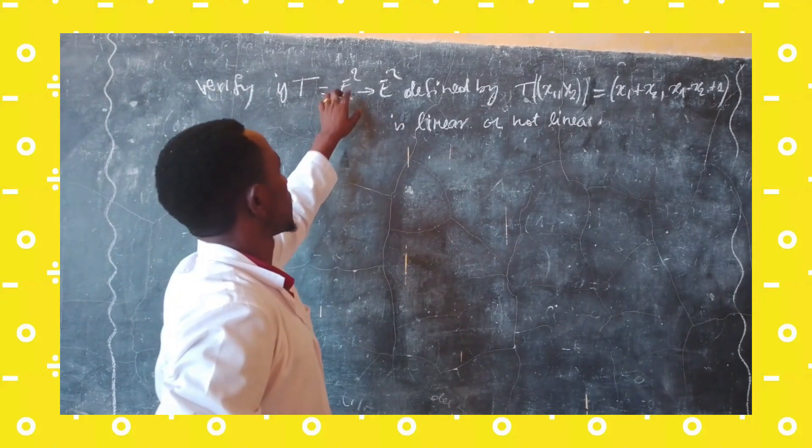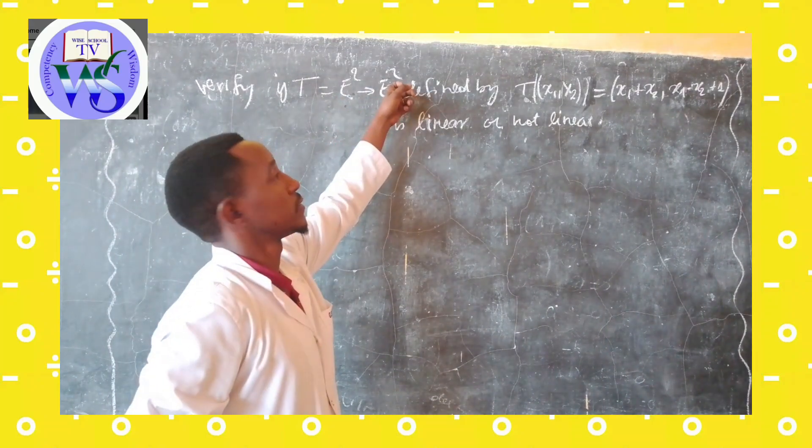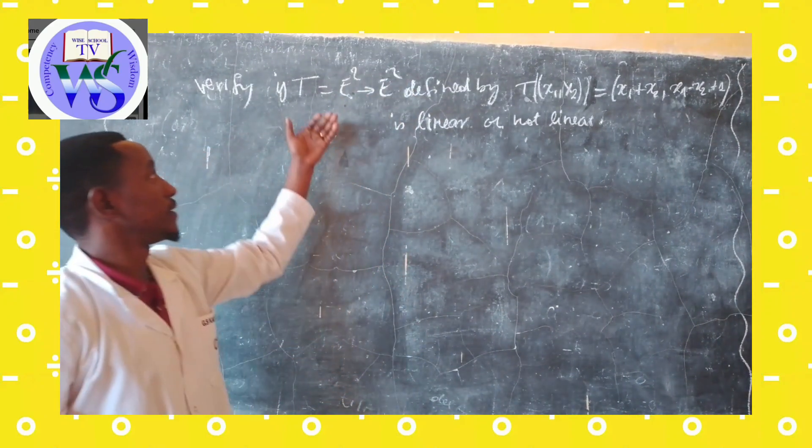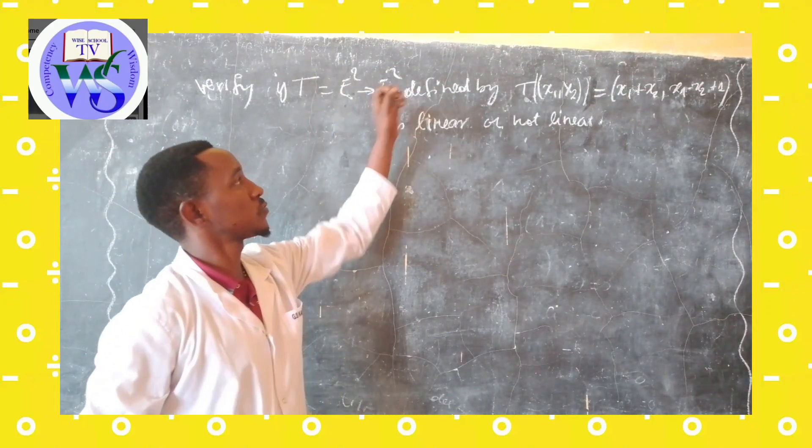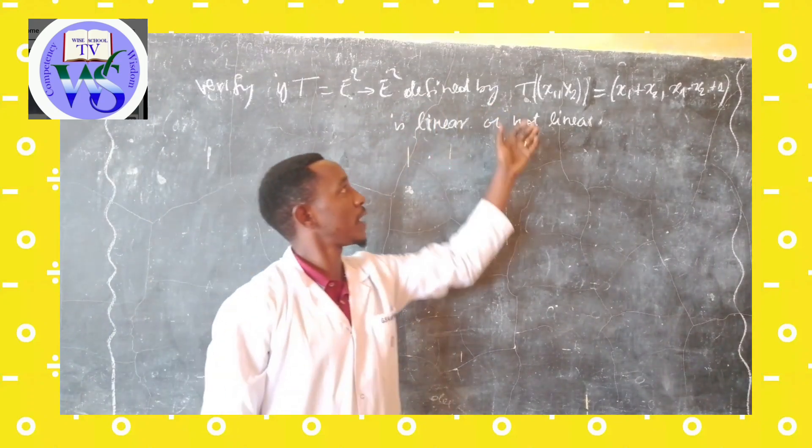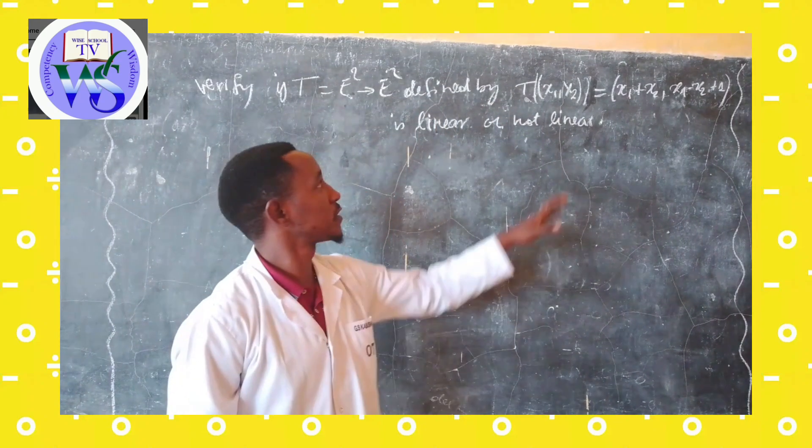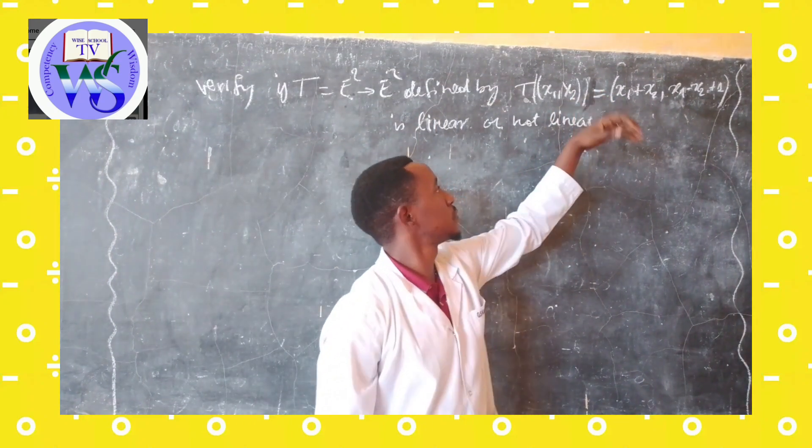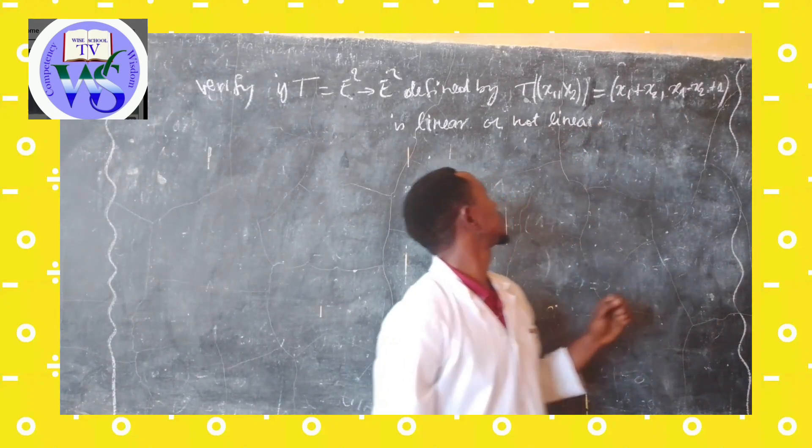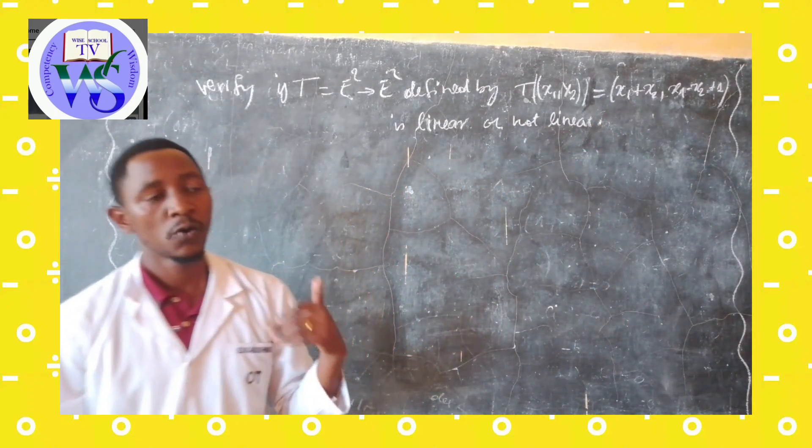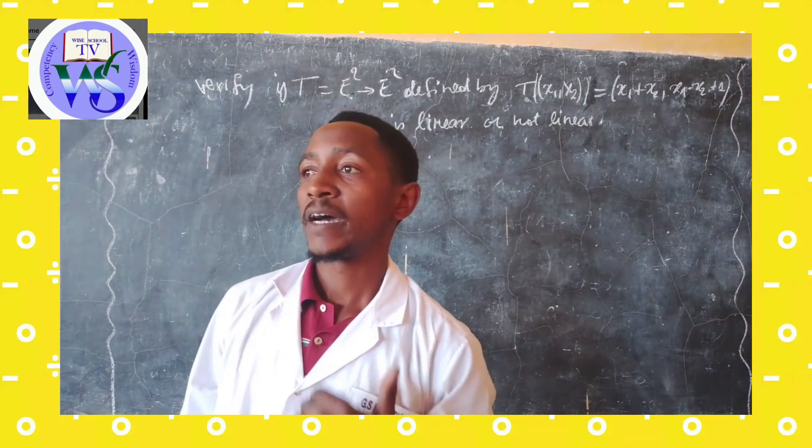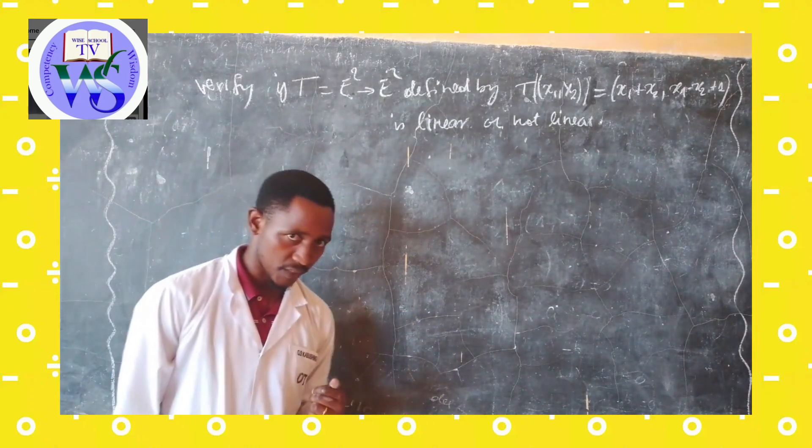If T: E² → E² is defined by T(x1, x2) equals that... is it linear or not, near subspace?